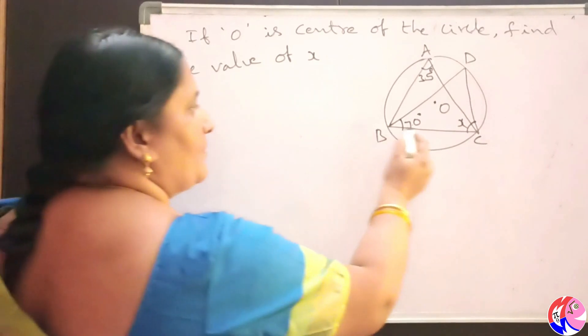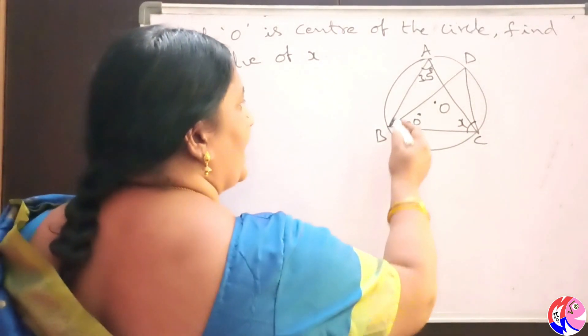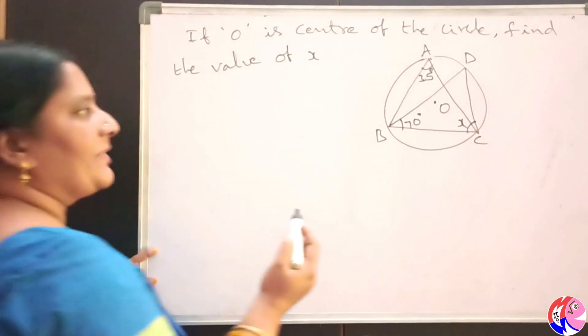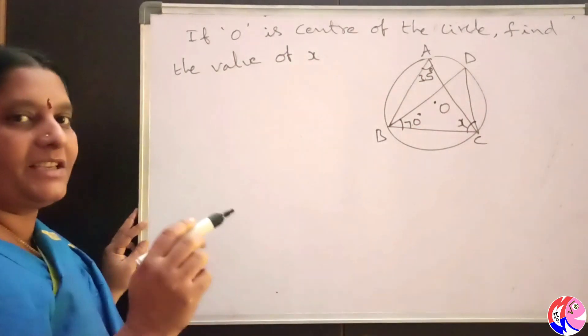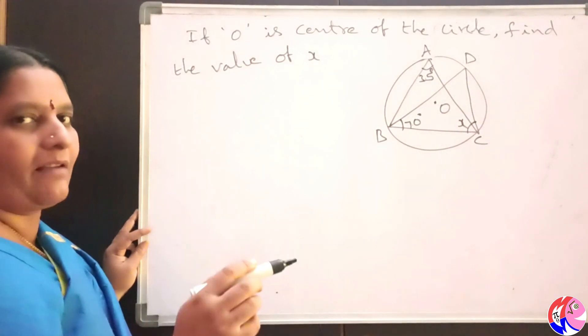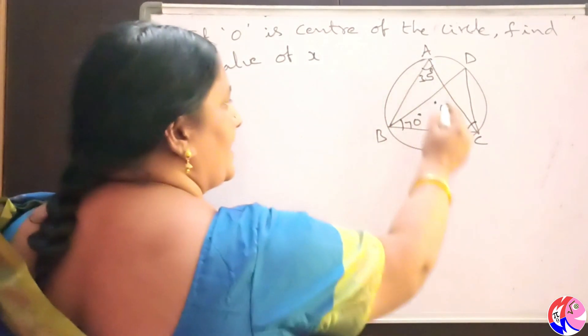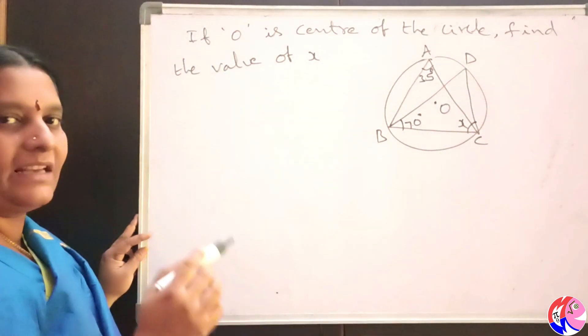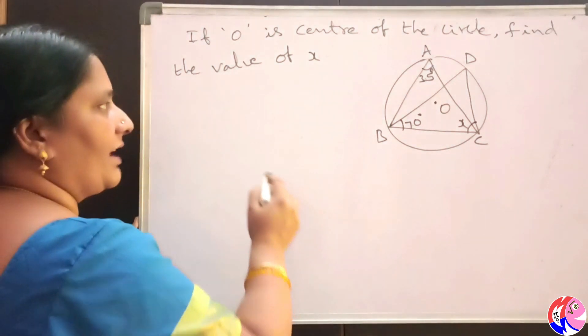This chord BC is making an angle BAC equal to 35 degrees at point A, and we know that angles in the same segment are equal. So, angle BAC, angle BDC are angles in the same segment and their measures are equal.